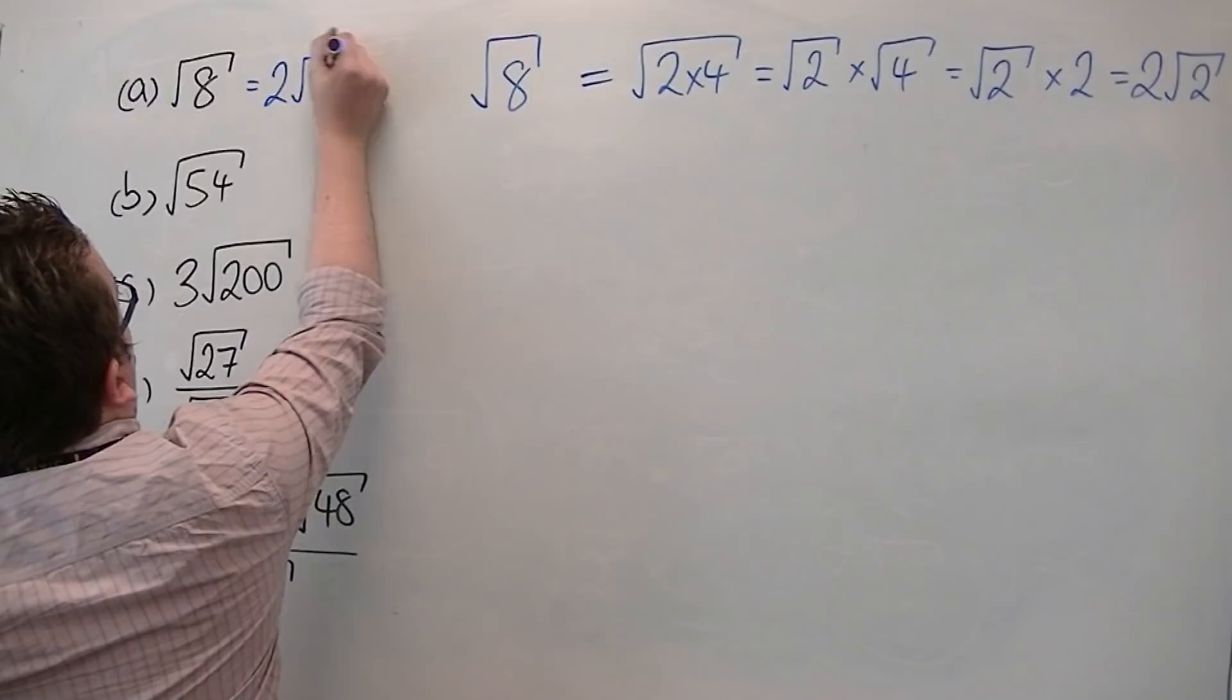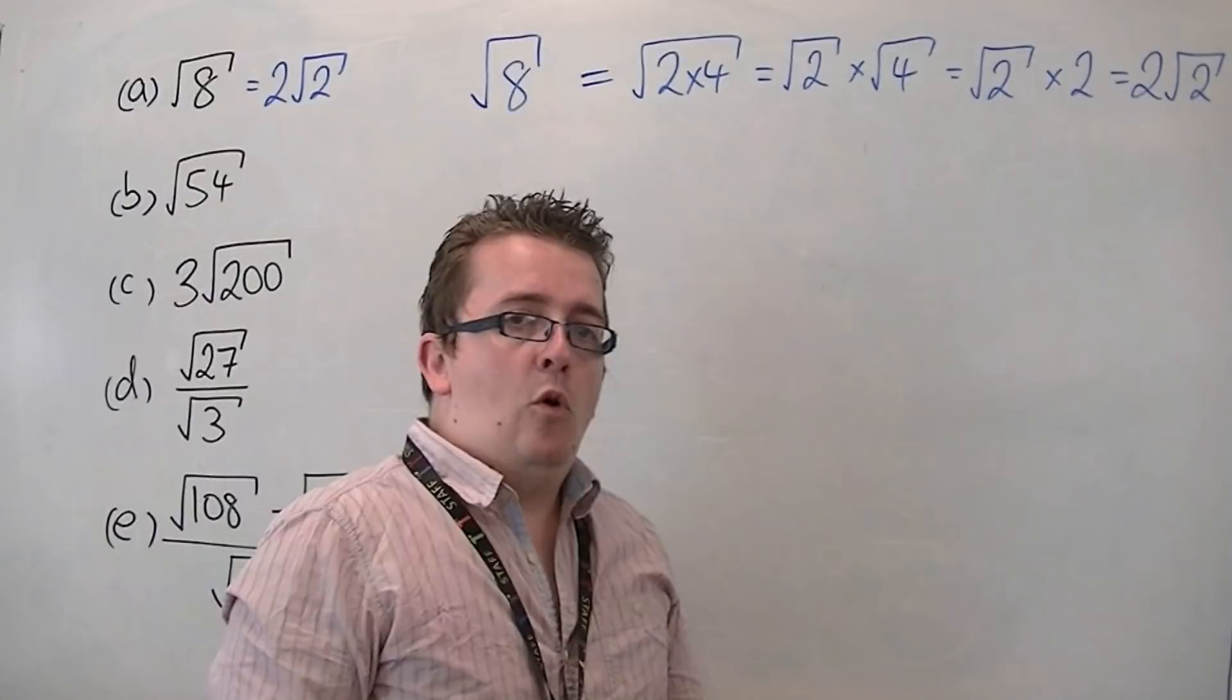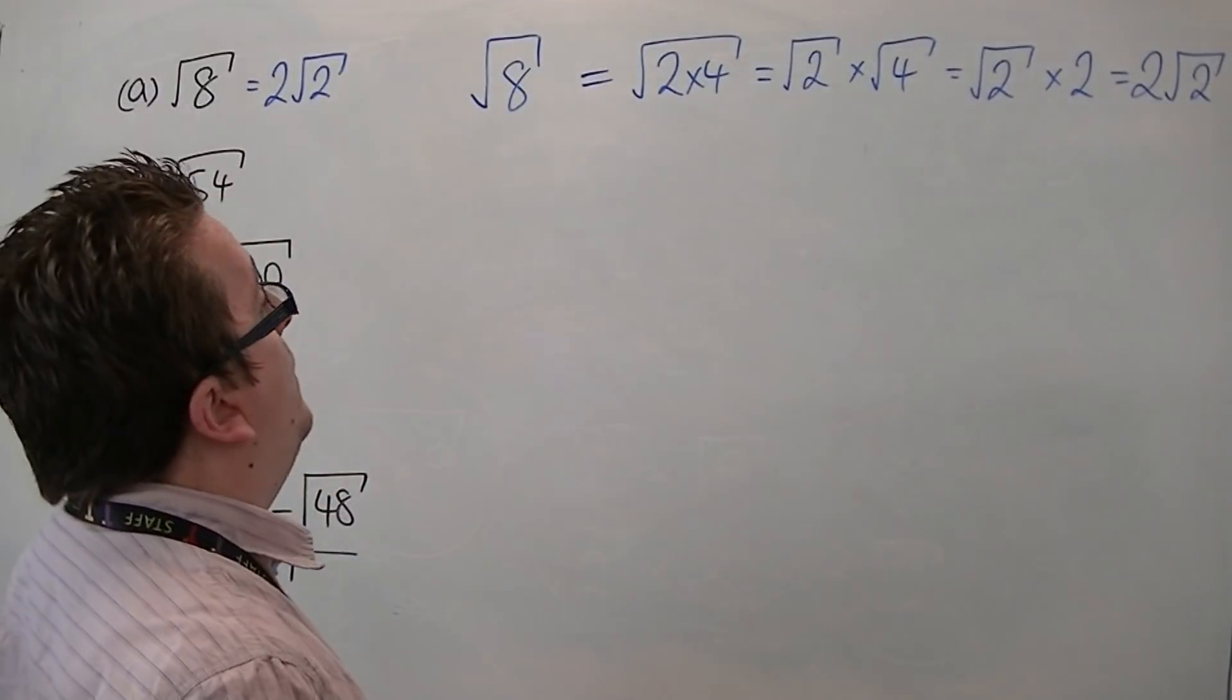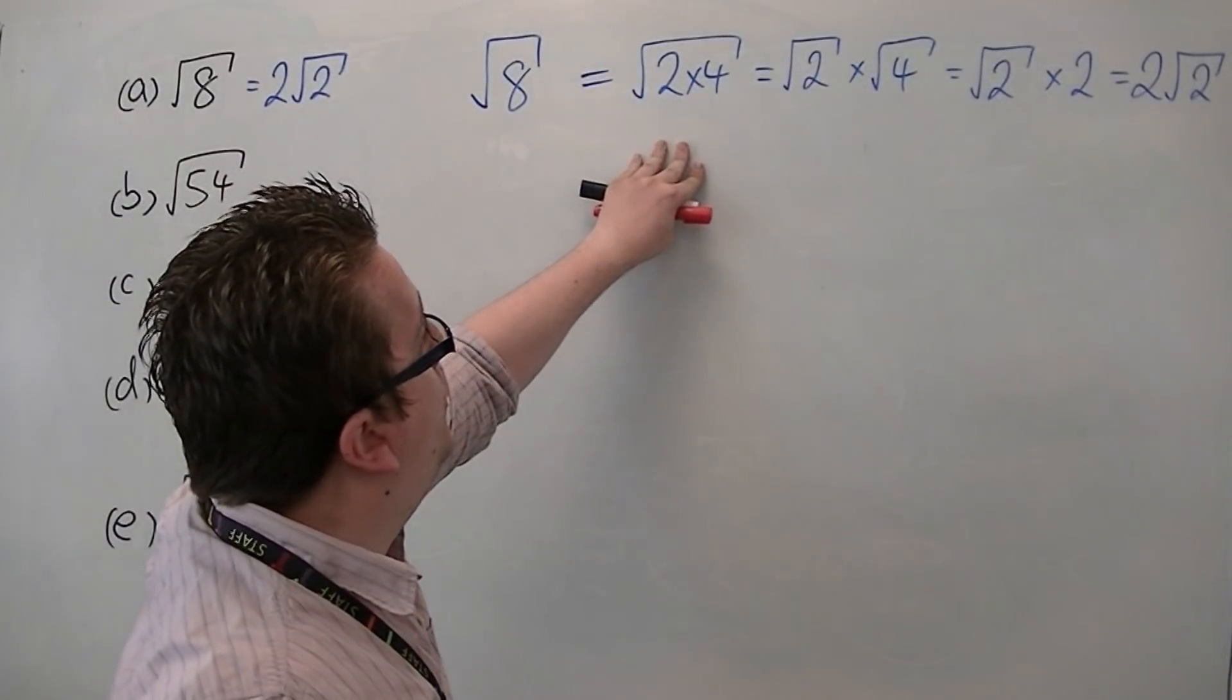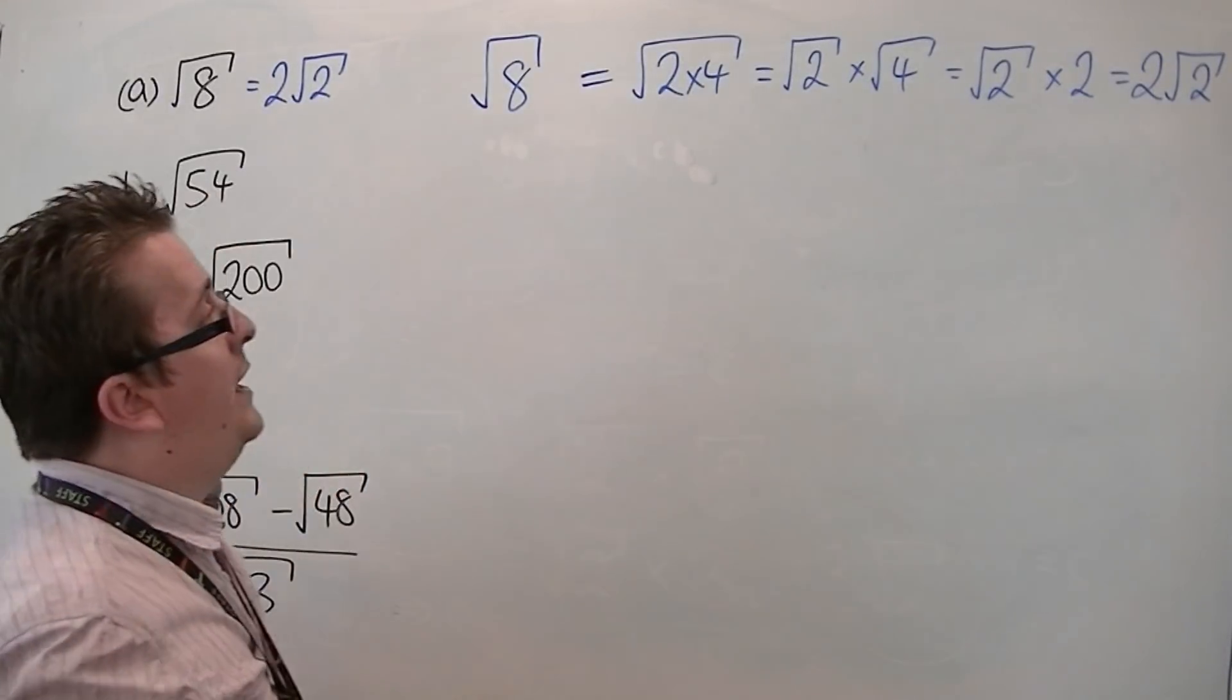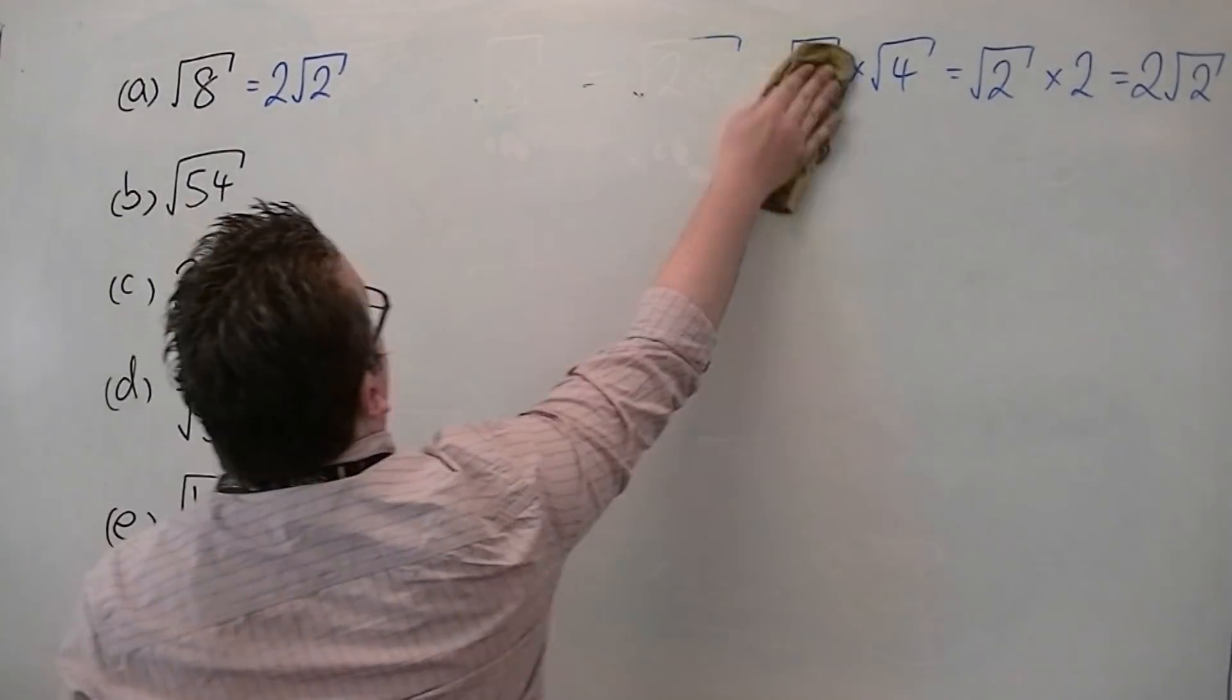I've put in more working steps than maybe you would really require. You might well be happier if you just write root 8 is equal to 2 times 4 square rooted and then jump straight to 2 root 2, then that's perfectly fine. I'm just making sure that you can see every step that we're working through here.